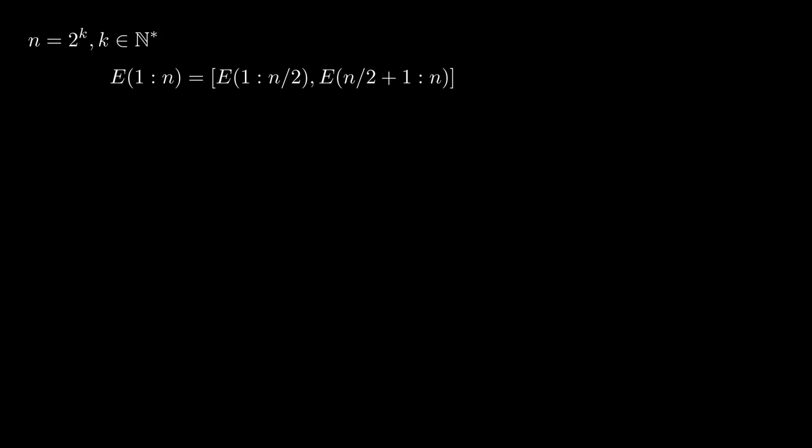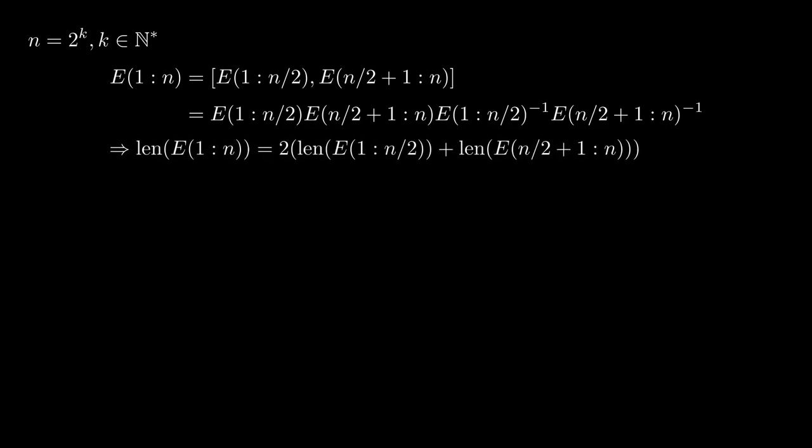We have already verified that for n equal to 4, the length being 16. E from 1 through n consists of two copies of e from 1 through n over 2 and two copies of e from n over 2 plus 1 through n. Since these intervals have a length of n over 2, from the induction hypothesis it means that applying e to both of them results in a sequence of length n over 2 squared.